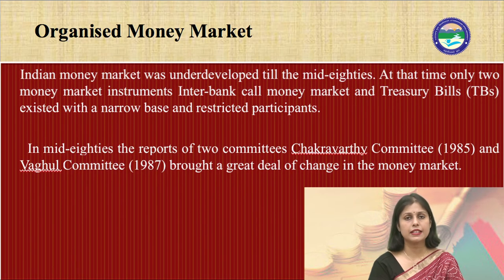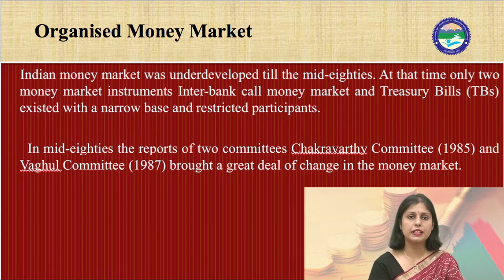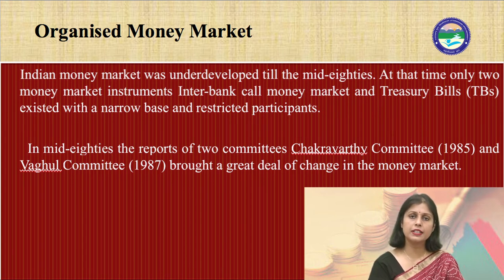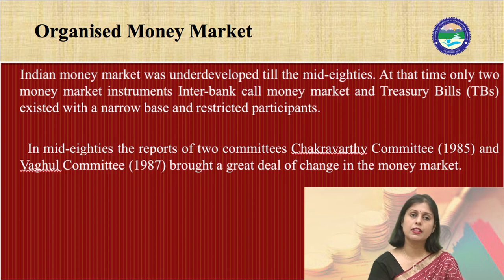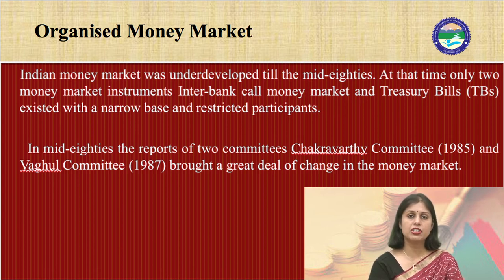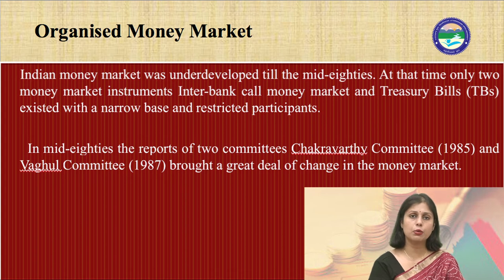The Indian money market was underdeveloped till the mid-1980s. At that time, only two market instruments — the interbank call money market and treasury bills — existed with a narrow base and restricted participants. In the mid-1980s, the Chakravati Committee (submitted in 1985) and the Vagul Committee (established in 1987) brought a great deal of change. Both reports provided a blueprint to the RBI on how best to deregulate and develop the Indian money market.